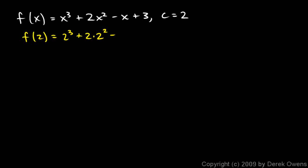Continuing: 2 cubed plus 2 times 2 squared minus 2 plus 3 is 8 plus 8 minus 2 plus 3, which equals 17. Then we take the limit as x approaches 2 of f of x minus f of 2.